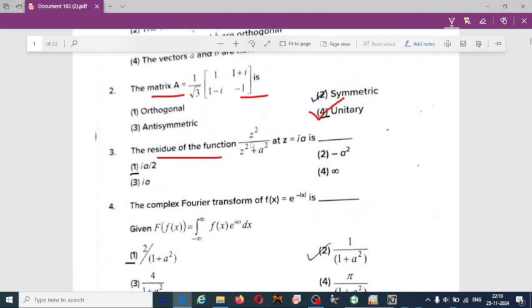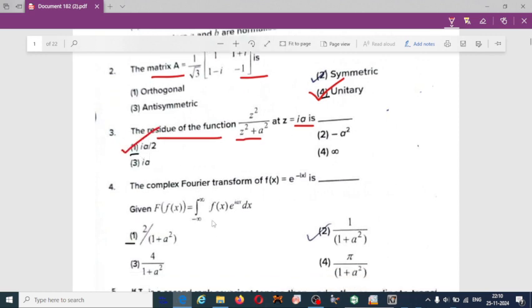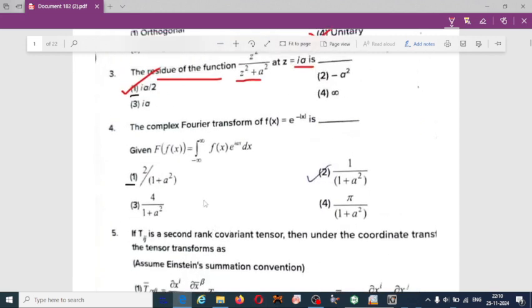The residue of the function z squared divided by z squared plus a squared at z equal to i·a is - if you solve this one you will get the answer i·a divided by 2. The complex Fourier transform of f(x) equal to e to the power minus mod x is 2 by 1 plus a squared.